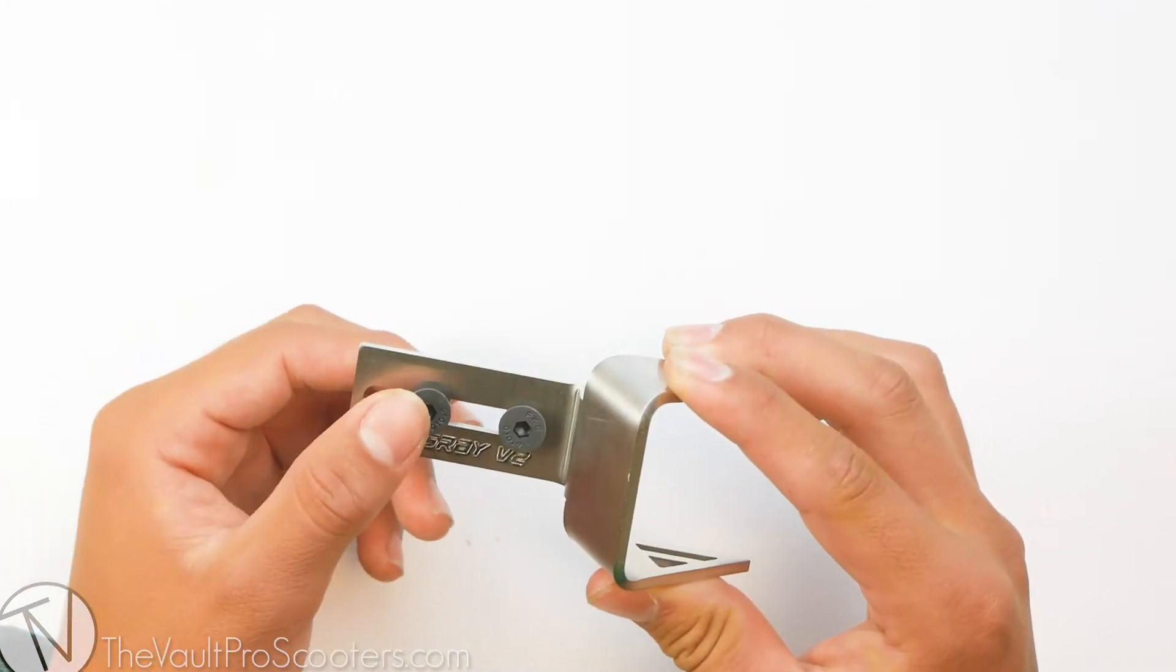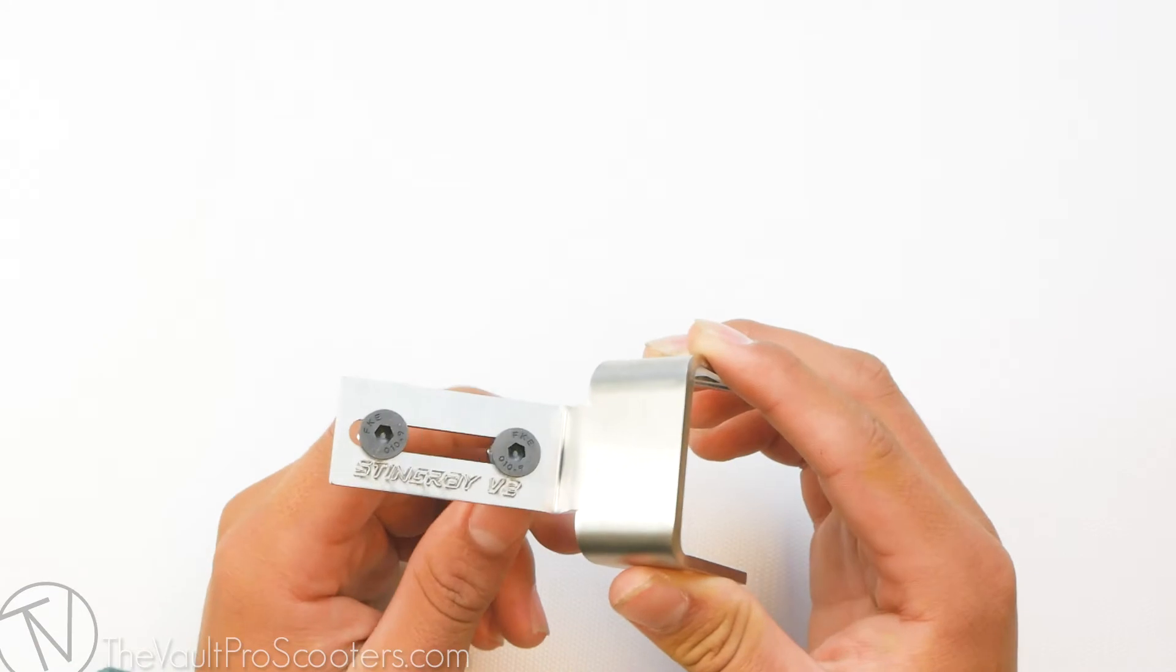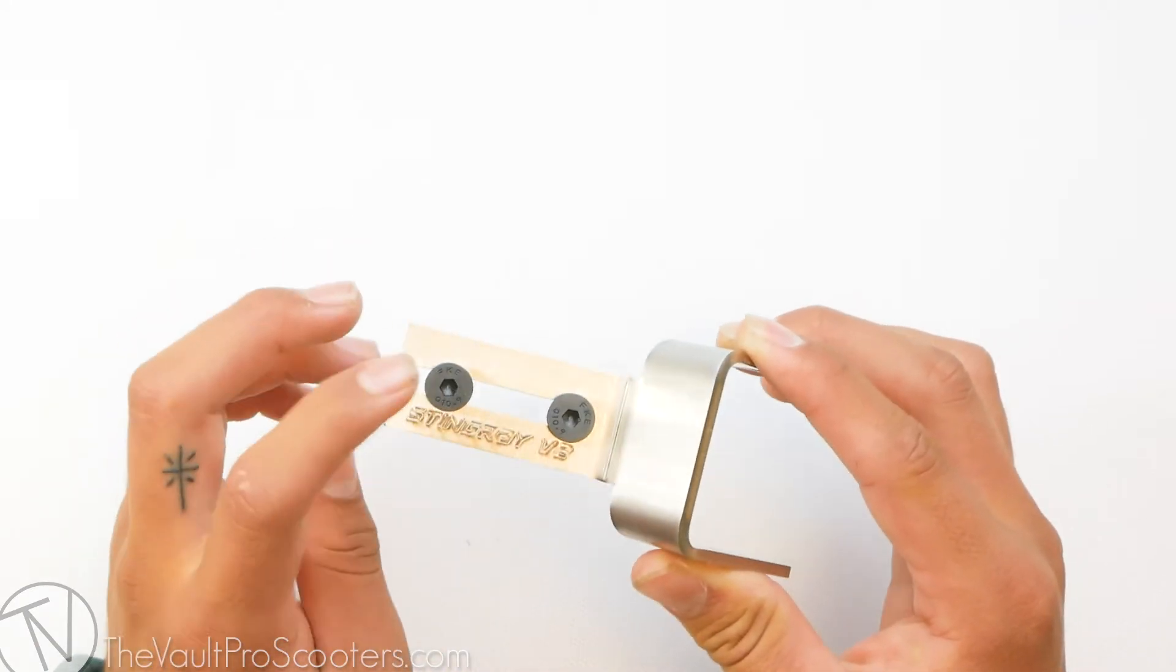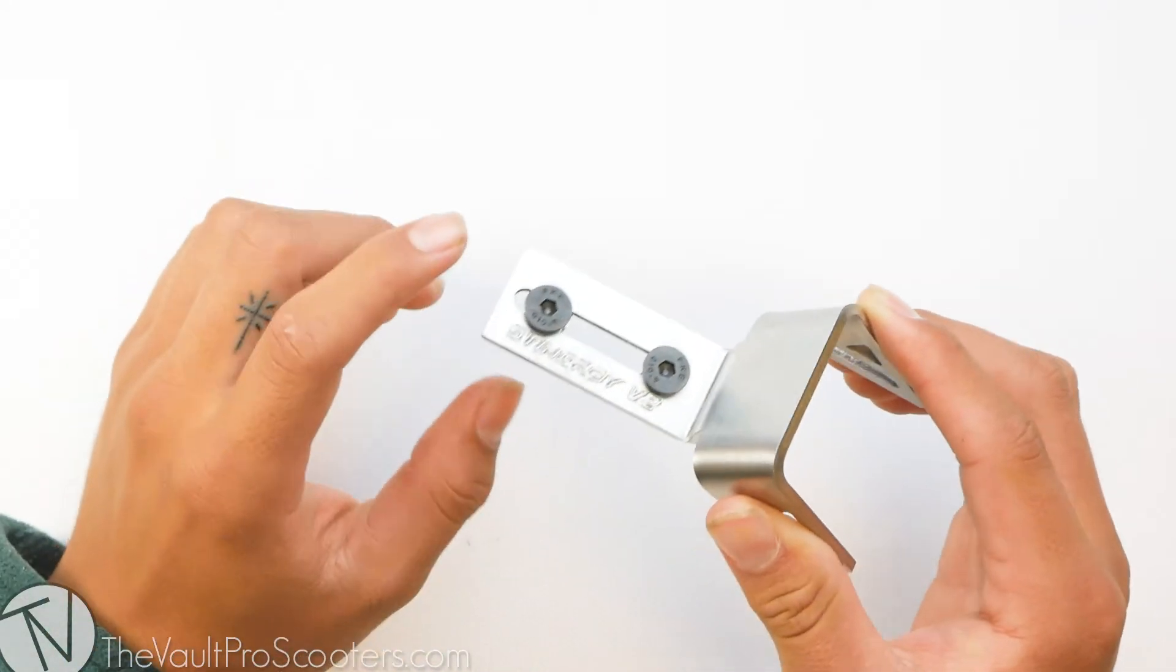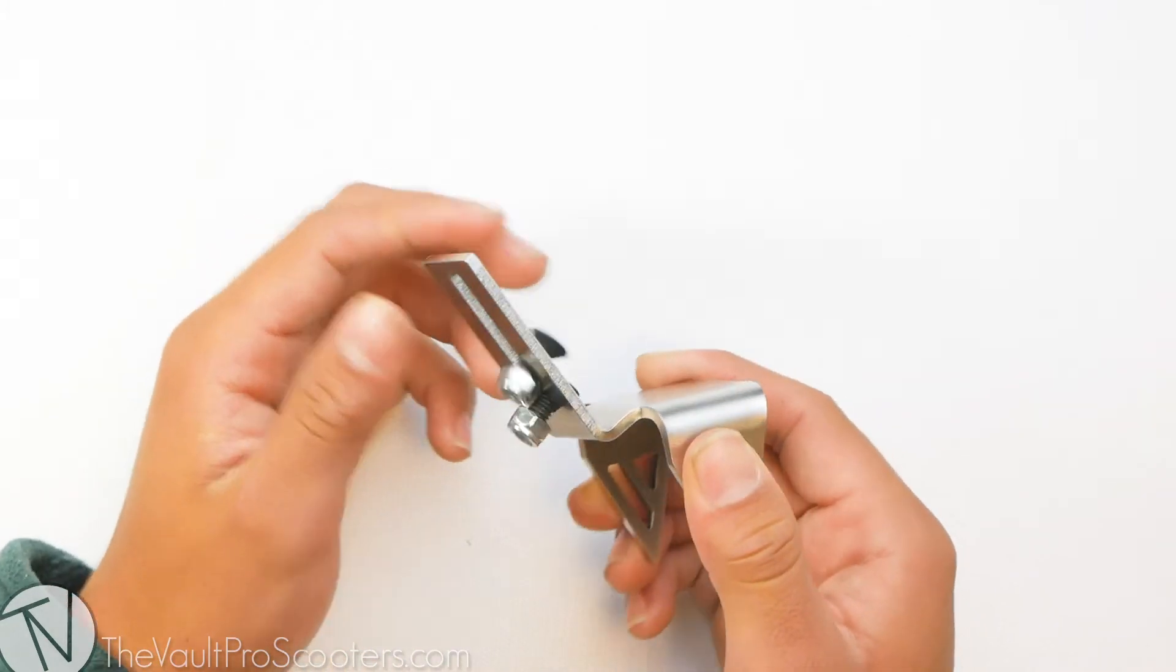The Stingray fender is mounted with two bolts and keep in mind this fender does work with any deck that mounts their brakes from the top. The bolt runs through from the top of the deck down through the middle of the brake and tightens from the bottom.